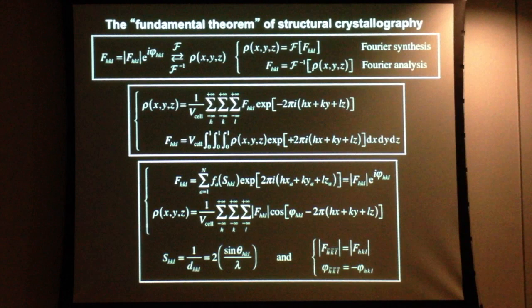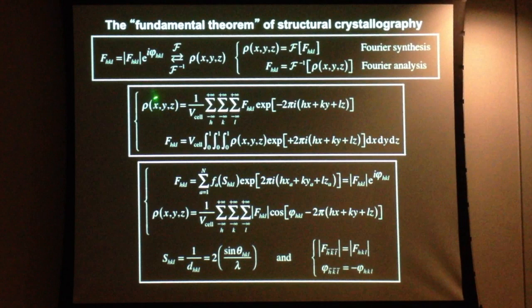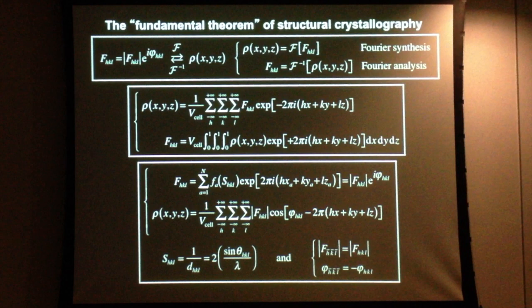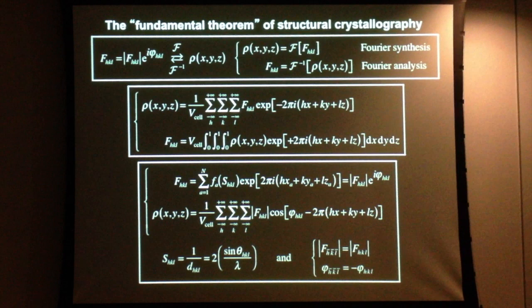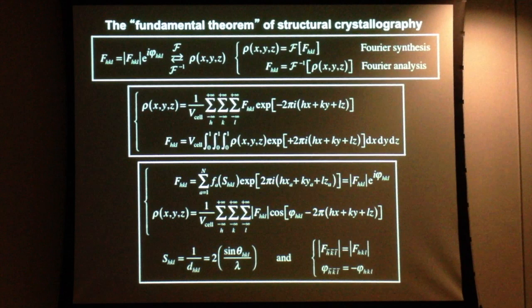We cycle in this map, sometimes for a long time, because we start out with a very rough estimate of the density distribution—maybe from knowing the positions of just a few heavy marker atoms. Recycling, we try to improve the model for the density by improving the agreement between the calculated and measured amplitudes.